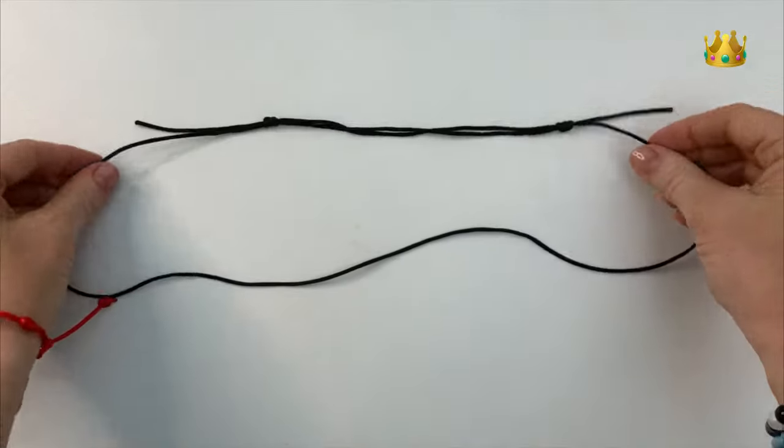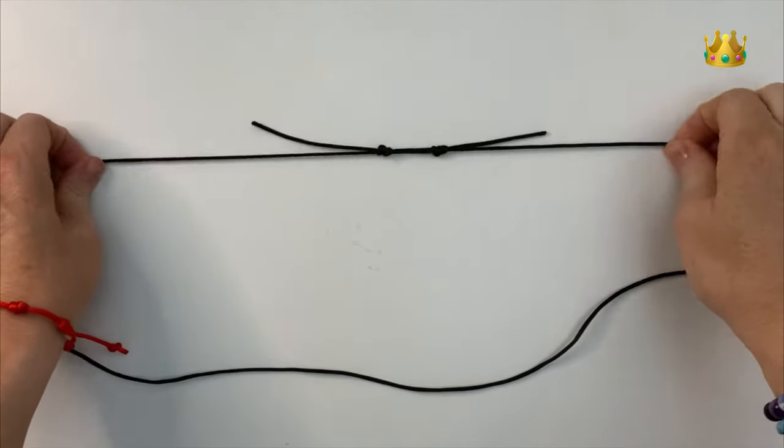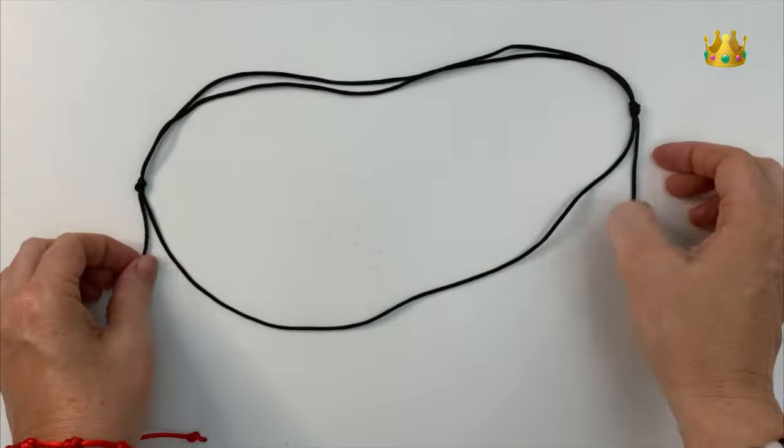So your sliding knot should slide along the other cord. So you can adjust your bracelet or necklace.